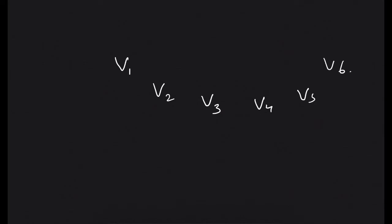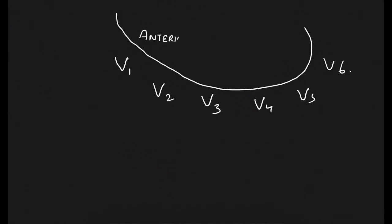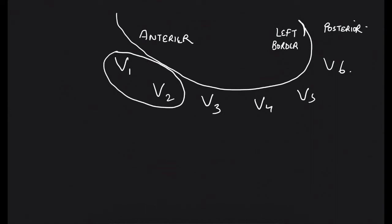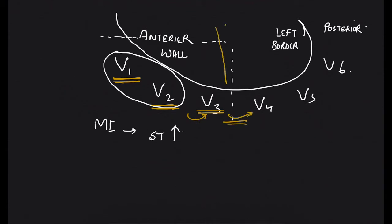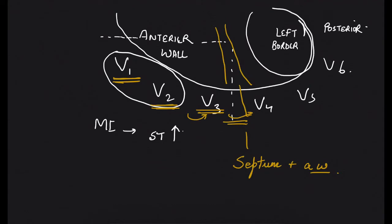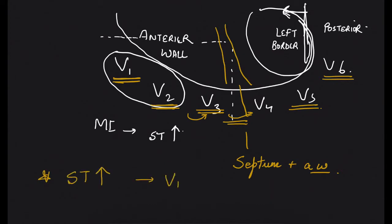We'll be starting with the chest leads first. There are six chest leads named V1 to V6. These chest leads, based on their placement, represent a certain part of the heart. Any disease from the anterior wall will reflect best in chest leads V1 and V2 because they are placed just above it. For example, if there is MI of the anterior wall, ST elevation will be seen in V1, V2, or even V3. Disease of the septum will be seen in V3 and V4. Disease of the left ventricle will show changes more prominently in V5 and V6.